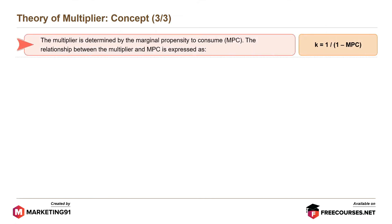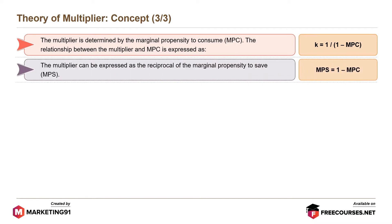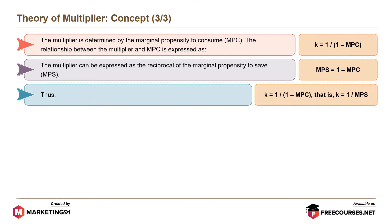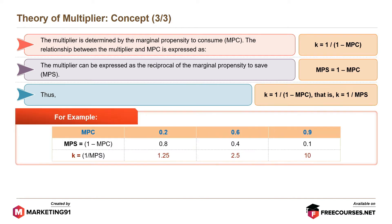The multiplier is determined by the marginal propensity to consume, or MPC. The relationship between the multiplier and MPC is expressed as K equals 1 divided by 1 minus MPC. The multiplier can also be expressed as the reciprocal of the marginal propensity to save, that is, MPS equals 1 minus MPC. Thus, K equals 1 divided by MPS. For example, if the MPC is 0.2, then the MPS is 1 minus 0.2, which is 0.8. Thus, the multiplier K equals 1 divided by MPS equals 1.25.